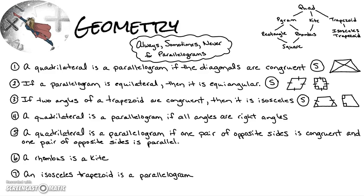Number four: a quadrilateral is a parallelogram if all angles are right angles. That is always true, because a four-sided figure with all four angles being 90 degrees is forced to be a rectangle, and a rectangle is a type of parallelogram.